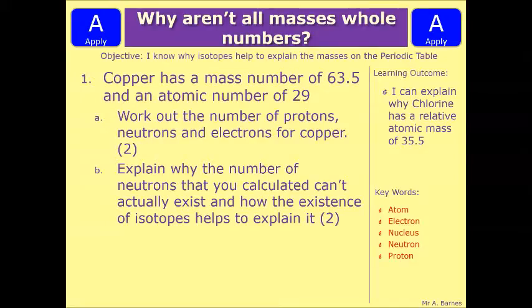Right, let's have a look at a couple of questions. This one is bringing in some previous knowledge as well. It says copper has a mass number of 63.5 and an atomic number of 29. Part A, work out the number of protons, neutrons and electrons for copper. Part B, explain why the number of neutrons that you calculated can't actually exist, and how the existence of isotopes helps to explain it. Think back to what we did in the video. Why is it not 63.5, and therefore why are the neutrons not what you calculated in part A? Pause the video and have a go at this question now.